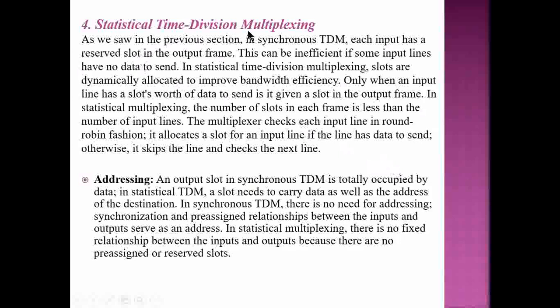Now let's discuss statistical time division multiplexing. As we saw, in synchronous TDM each input has a reserved slot in the output frame, which can be inefficient if some input lines have no data to send. In statistical TDM, slots are dynamically allocated to improve bandwidth efficiency. Only when an input line has data to send is it given a slot in the output frame.